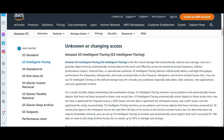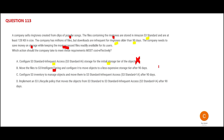Option B is S3 Intelligent-Tiering, which has some built-in intelligence. It will automatically detect that files are infrequently accessed and older than 90 days, and move them accordingly. However, I will mark this wrong because Intelligent-Tiering is expensive — very expensive compared to other options — because of the intelligence built into it.